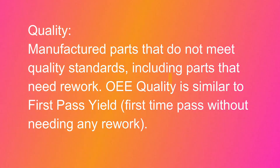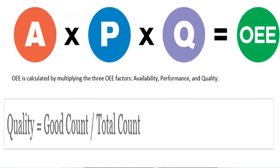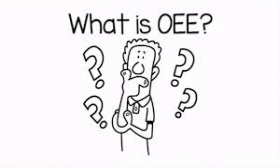When we talk about Quality, our intent is to understand how many of the parts manufactured are not meeting quality standards — they may need rework, segregation, or repair. When talking about quality, we are also talking about first time yield or first time right. The formula for Quality is: Good Quality Parts produced divided by Total Parts produced.